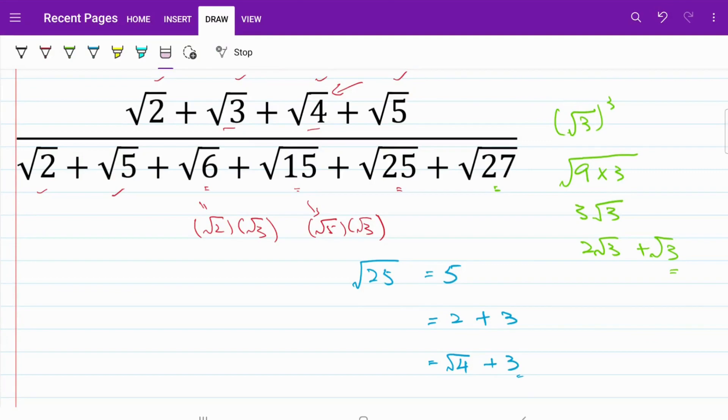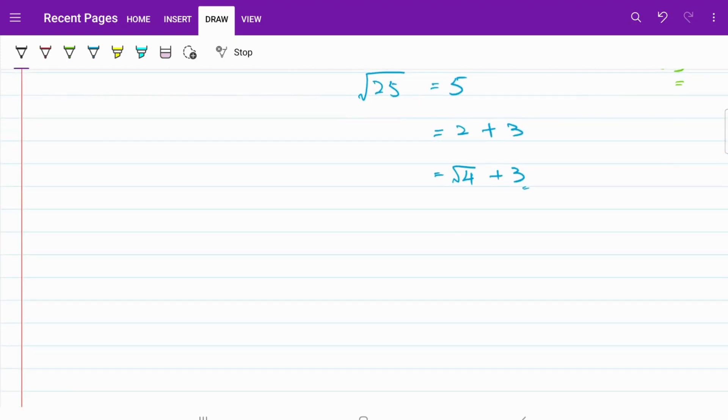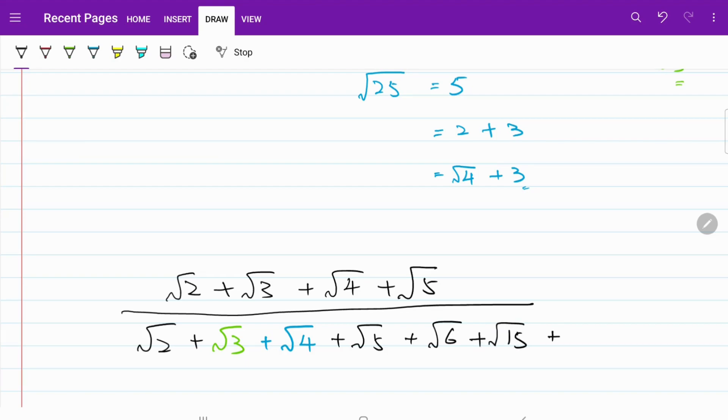Now I have all my components in place, so let me rewrite the fraction using the different color ink. I have √2 + √3 + √4 + √5 on the numerator. On the denominator, I have √2 + √3 + √4 + √5 + √6 + √15 + √9 + √12.